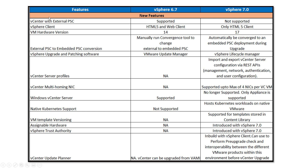Let's start the comparison between the features. The first one is vCenter Server with external Platform Services Controller (PSC), which was supported in vSphere 6.7 but deprecated in 7.0. If you have an existing deployment with an external PSC, during an upgrade it automatically converges to an embedded deployment — no additional steps needed, as everything is included in the 7.0 installer.